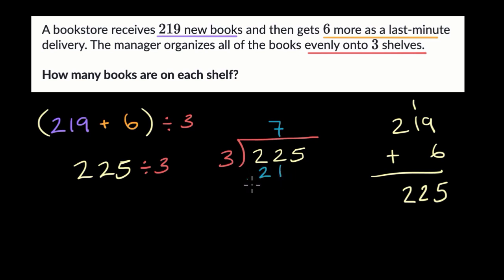We can subtract 22 minus 21 is one. Bring down this five, we get a 15. Three goes into 15 exactly five times. Five times three is 15. And then we have no remainder.